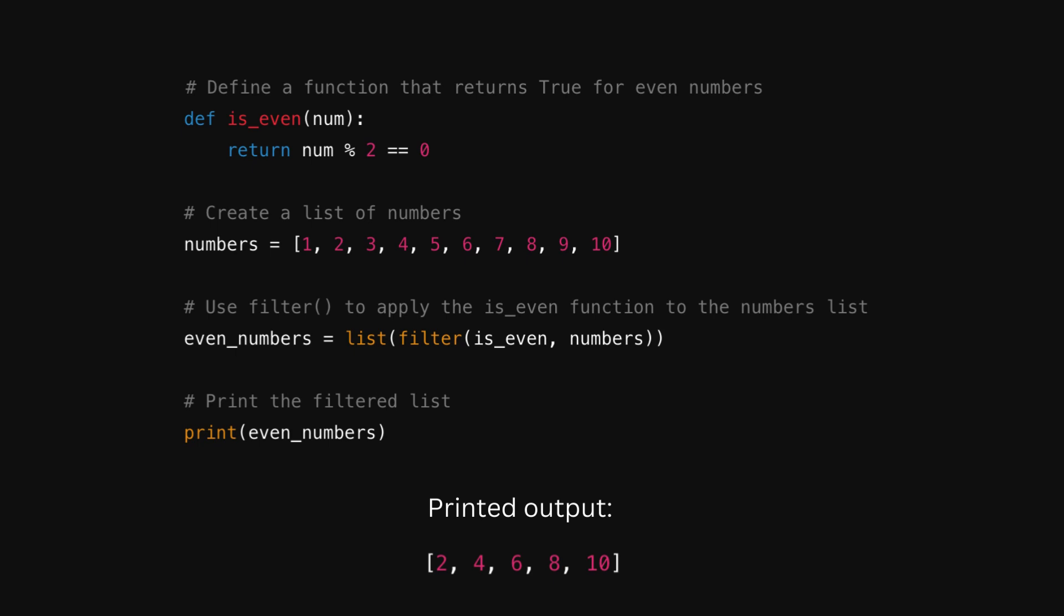We're going to define a function called isEven that returns true if the number is even. Then we're going to create a list of numbers from 1 to 10 and call that list numbers.